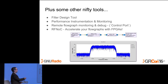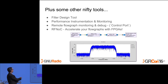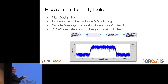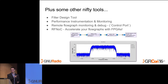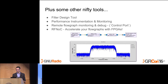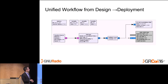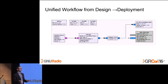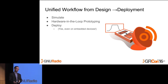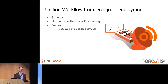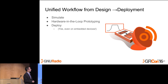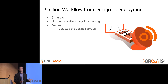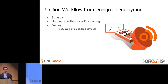With RFNOC, this flow graph looks exactly the same as all the others, except the colors are different — I'm starting on my host computer, sending data, offloading processing into an FPGA, and bringing it back, all seamlessly. The major item here is what we provide: a unified workflow from design to deployment. When you create your flow graph, you can start purely by simulating with digital sources and sinks, then connect hardware, and eventually deploy — all through a single workflow with the tools provided.